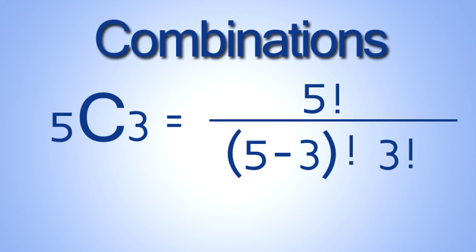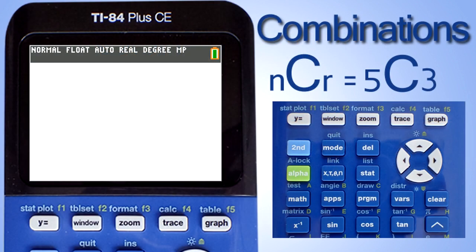The combination formula is five factorial divided by five minus three factorial times three factorial. To solve this combination problem with the TI-84 Plus CE calculator, press the math key here.